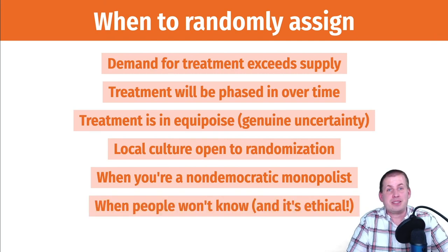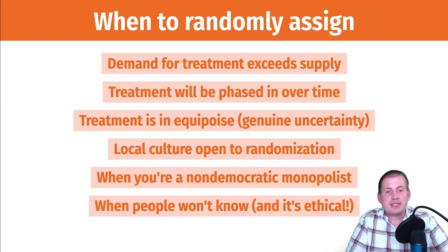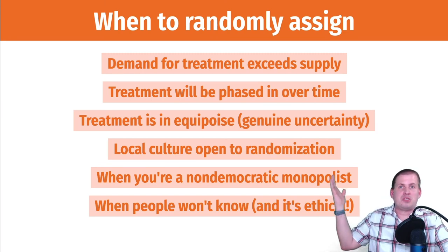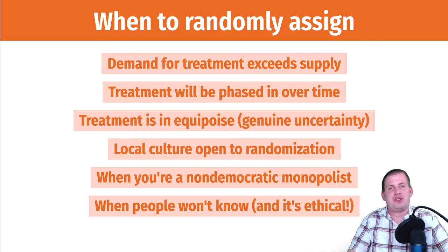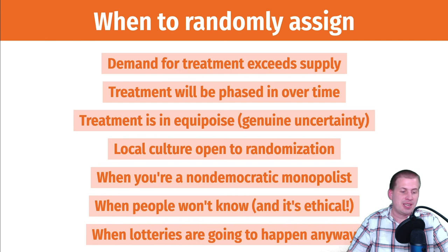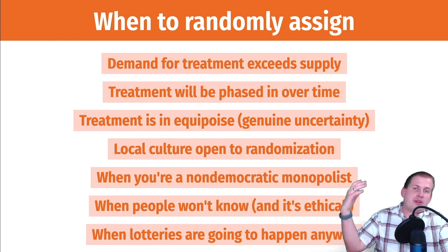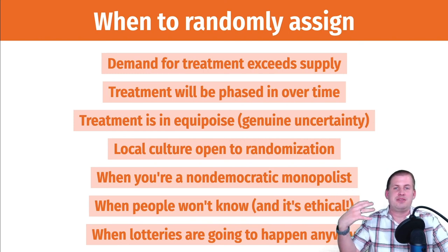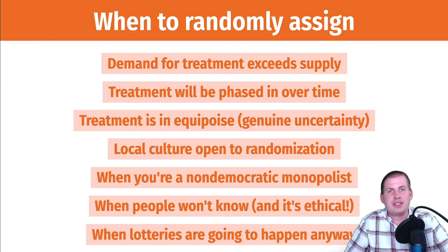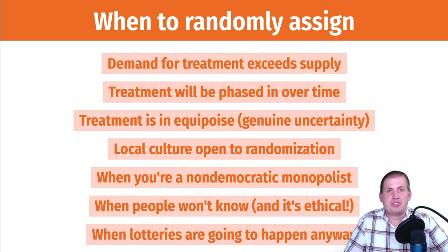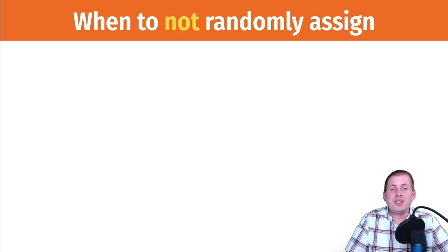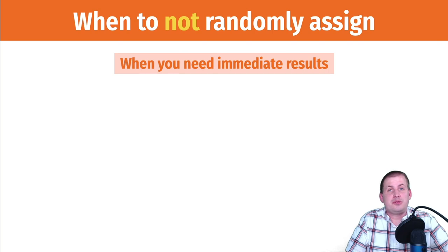You can randomly assign if people don't know and it's ethical — though that's murky territory since you generally want to divulge when people are in a study. There are ethical books and readings that address this. Finally, if a lottery is going to happen anyway, you can jump on board — that's what happened with the Oregon Medicaid study, where Oregon was already running a lottery and researchers joined in.